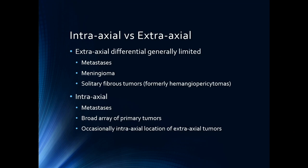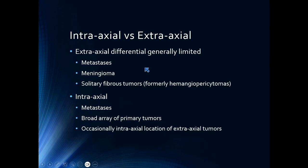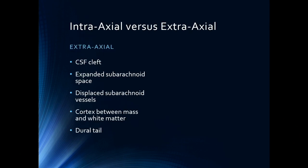When I think about extra-axial, our extra-axial differential diagnosis is generally limited to primarily things like metastases, meningiomas, or what used to be called hemangiopericytomas but are now solitary fibrous tumors. I'm going to separate this from intraventricular tumors as well. Intra-axial, again, in many adults we have metastases and many different primary brain tumors. And occasionally those extra-axial tumors will come intra-axial as well.